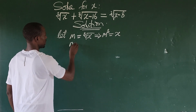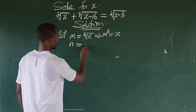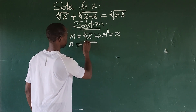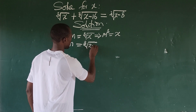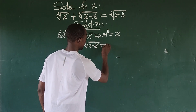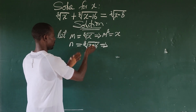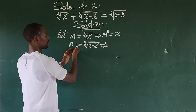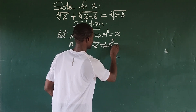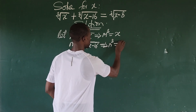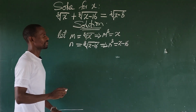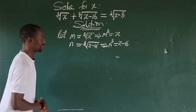We do the same thing for the next substitution. Let n be equal to the cube root of x minus 16. If we cube both sides of the equation, we get n to the power of 3 equals x minus 16.